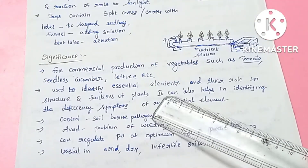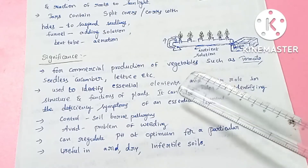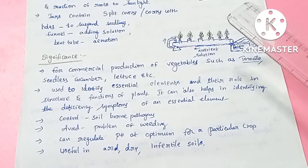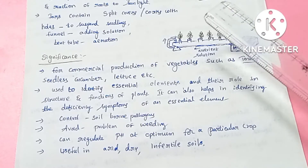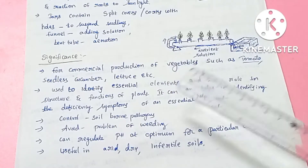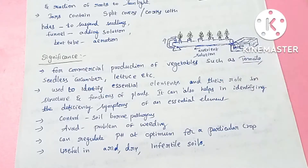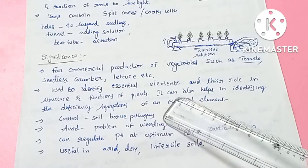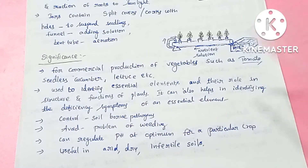The soil-borne pathogens — bacteria, fungus, virus — are controlled in hydroponics since there is no soil. Soil-borne pathogens cause plant diseases. If you use soil, you have a problem with soil-borne pathogens, and plants suffer from them. Hydroponics eliminates this problem.